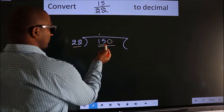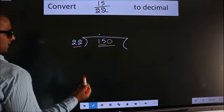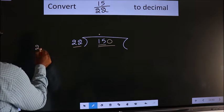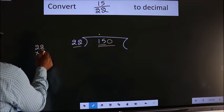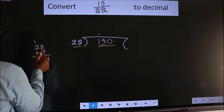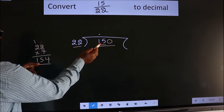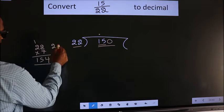A number close to 150 in 22 table is, let us check with 7. So, 22 into 7. 7 twos is 14. 7 twos is 14 plus 1, 154. 154 is exceeding, so we should go with 6.